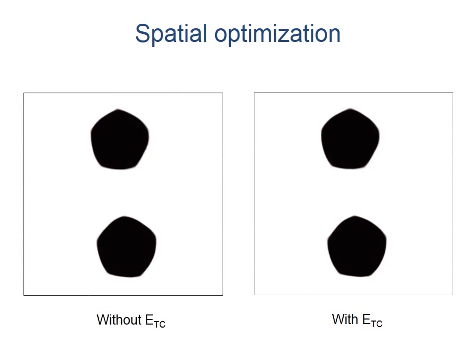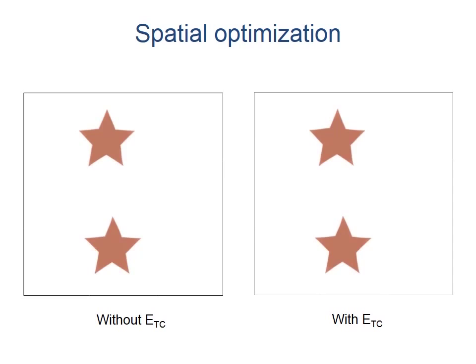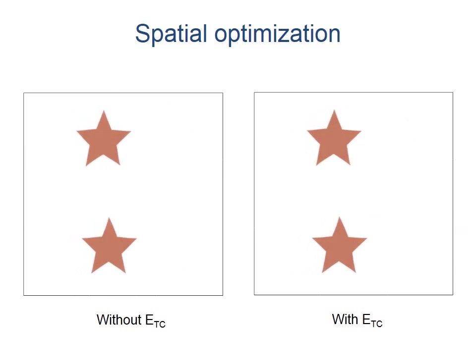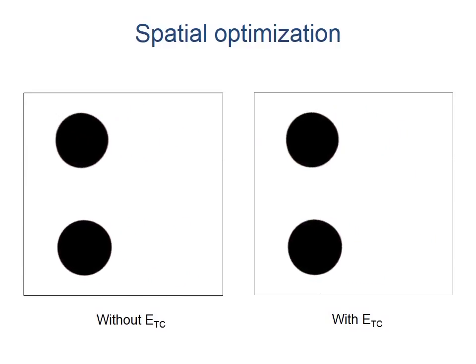Here is the final result after spatial optimization. The example on the left does not include the temporal coherence term, and thus results in popping artifacts due to the lack of temporal smoothness in the solution.